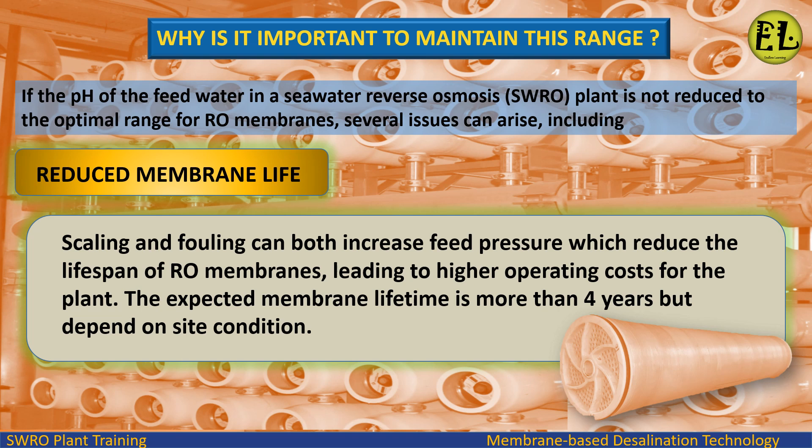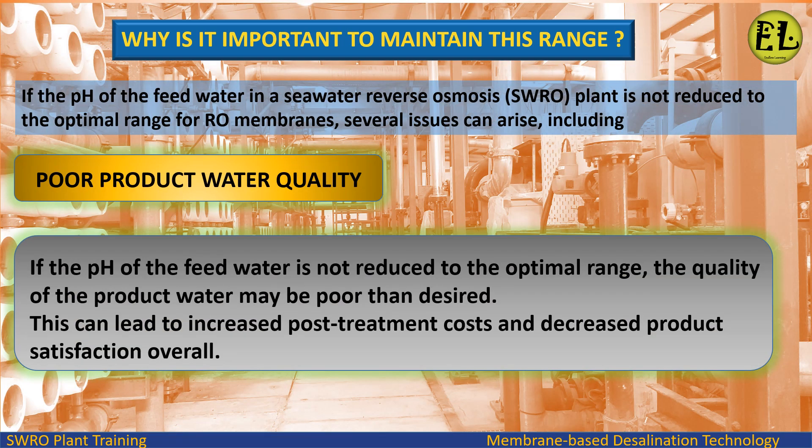Reduced membrane life: scaling and fouling can both increase feed pressure, which reduces the lifespan of RO membranes, leading to higher operating costs for the plant. The expected membrane lifetime is more than 4 years, but depends on site conditions.